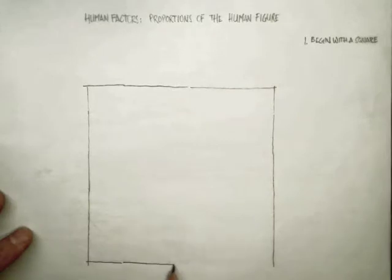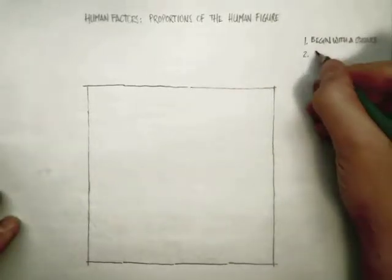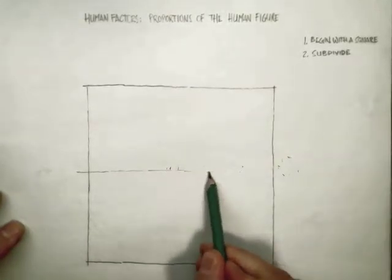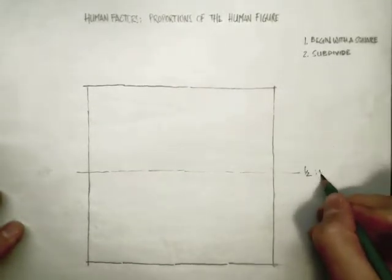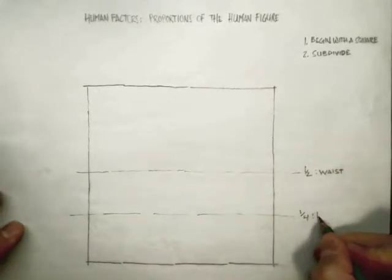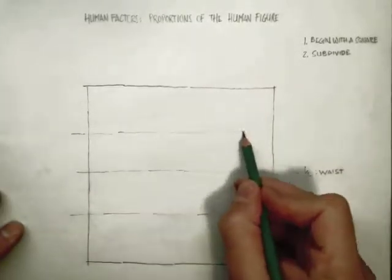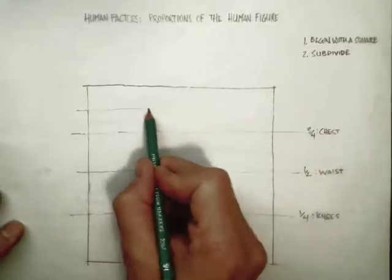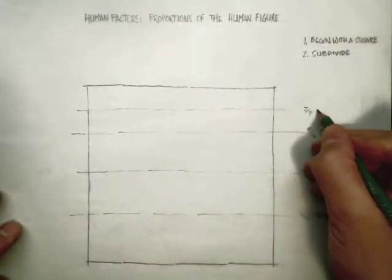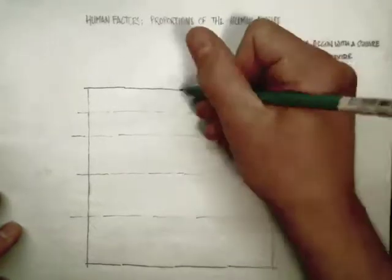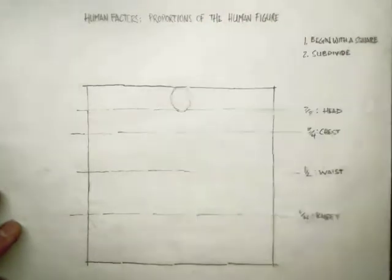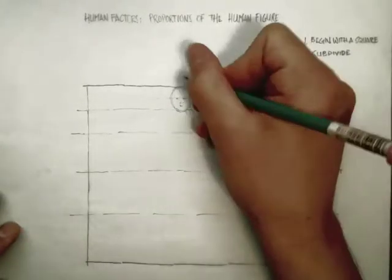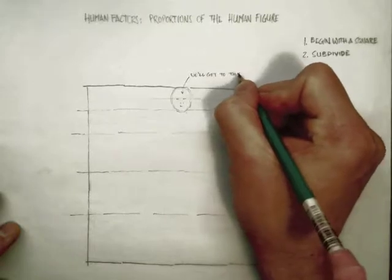Let's begin with a square. You're going to want to subdivide that square. At the halfway point, we put the waist. We subdivide again at the lower half, and at the quarter point we put the knee. The three-quarter point is the chest, and we subdivide that last quarter for the head. Now, the head is a little larger than one-eighth, but this gets us in the ballpark.